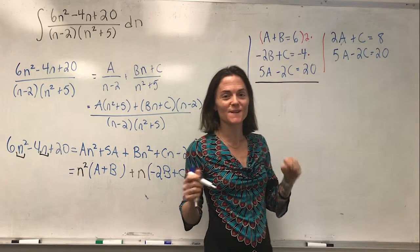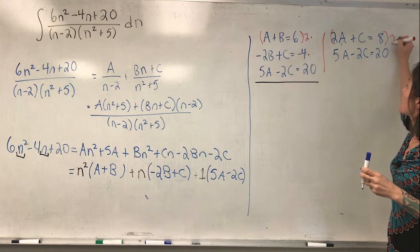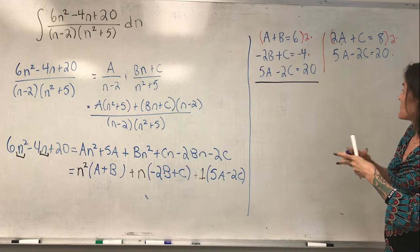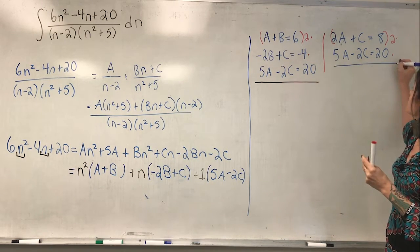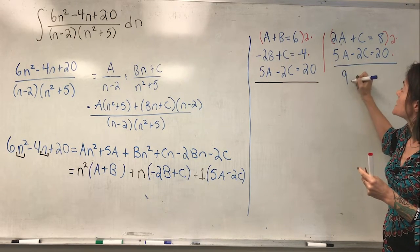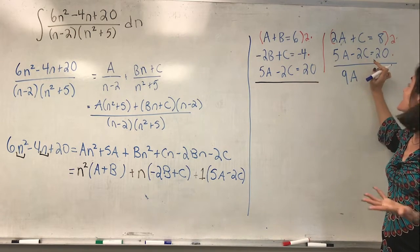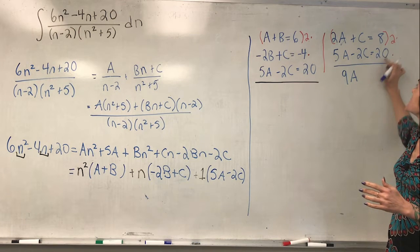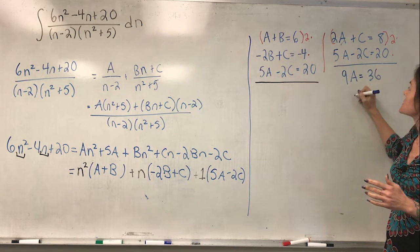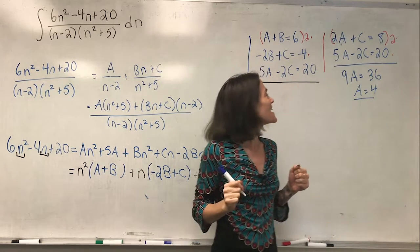I see minus 2C and a C, so I'm going to take two times the first and add it to the second. I get 4A plus 5A, which is 9A. Then 2C minus 2C is 0, and 16 plus 20 gives me 36. I have found one of them — A equals 4.